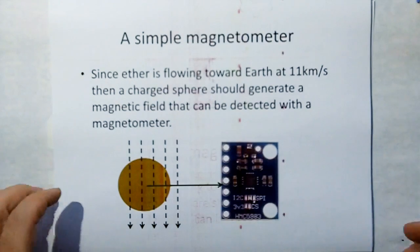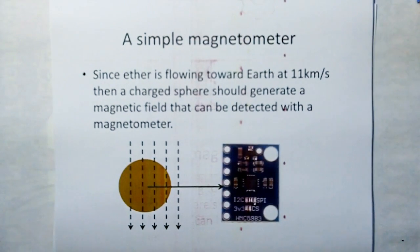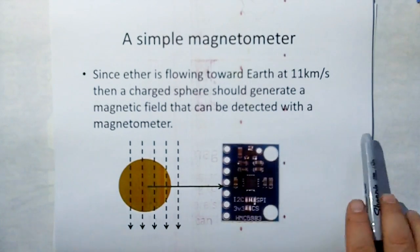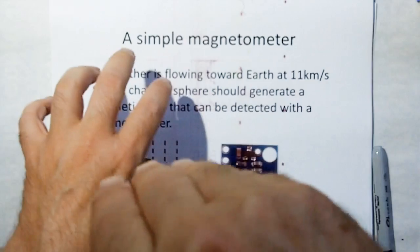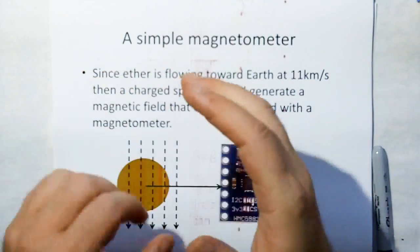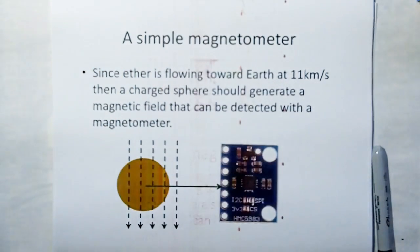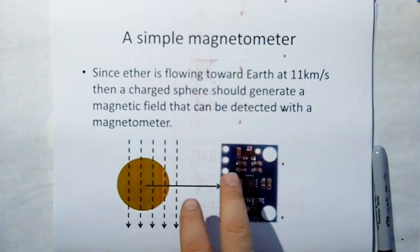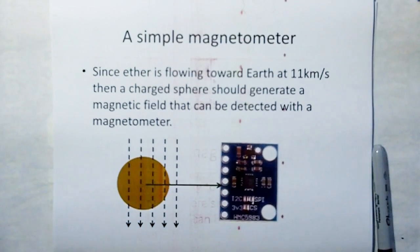So with a simple magnetometer, if I were to charge a sphere, a conductive sphere, put a charge on it, and put that on the desktop, and as the ether is flowing down through the sphere, it's going to generate a magnetic field. That magnetic field should be detectable with a sensitive magnetometer.